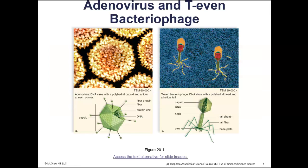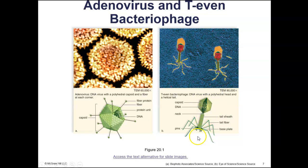Here are images of different viruses. The adenovirus has a geometric polyhedral capsid shape. It is a naked virus — it does not have an envelope. The green structure is the core, and inside you can see the nucleic acid is DNA. On the right is a bacteriophage, which is a virus that infects bacteria. It has a capsid and structures that help it anchor itself to the cell wall of the bacteria. It is a DNA virus.